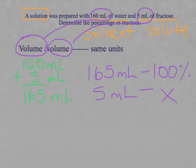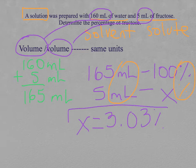Remember, we are always saying that these units, the same units, have to be in the same column. So, milliliters with milliliters and percentage with the final percentage we are looking for. Doing this conversion, we will get that X corresponds to 3.03% of fructose.